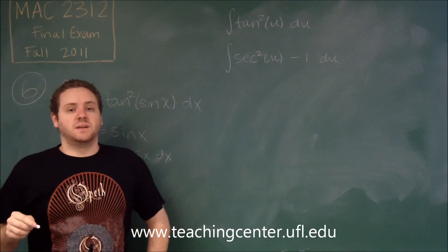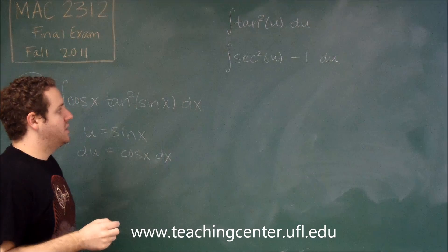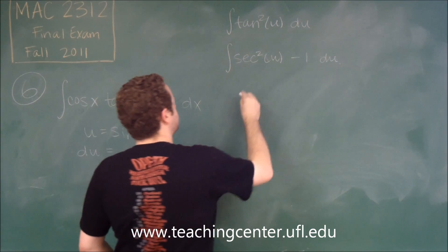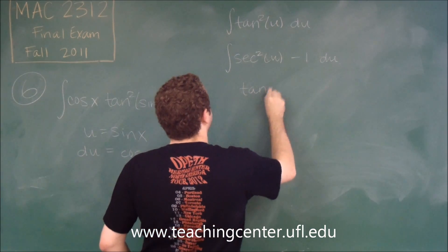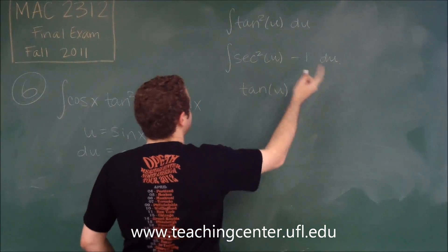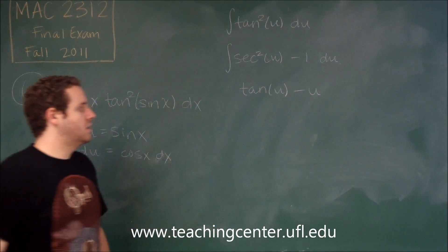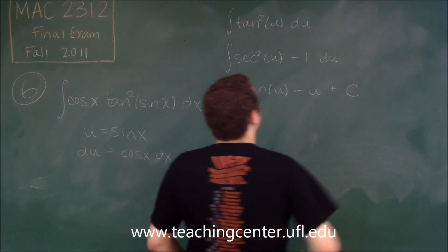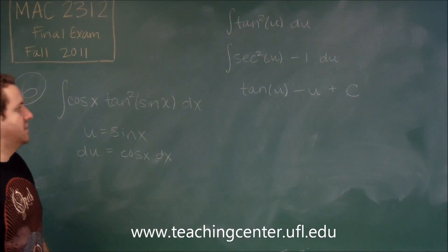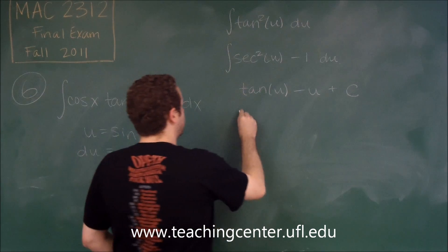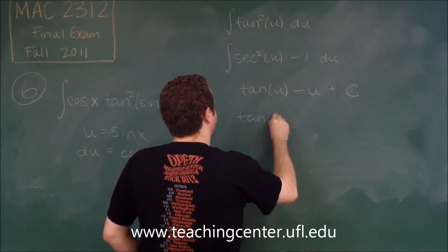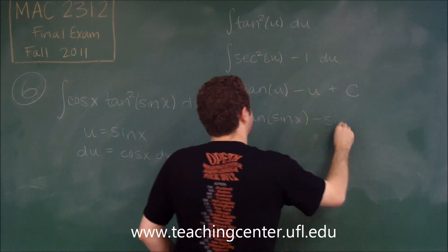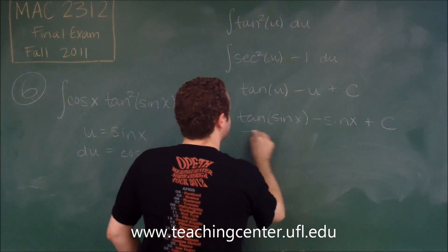Those are both easily integrable because secant squared is the derivative of tangent. So we can integrate that very easily. Our antiderivative here is just going to be tan u, and the antiderivative of 1 would be u plus c. Then we just substitute back in our u and we're done. We'd have tangent of sine x minus sine x plus c.